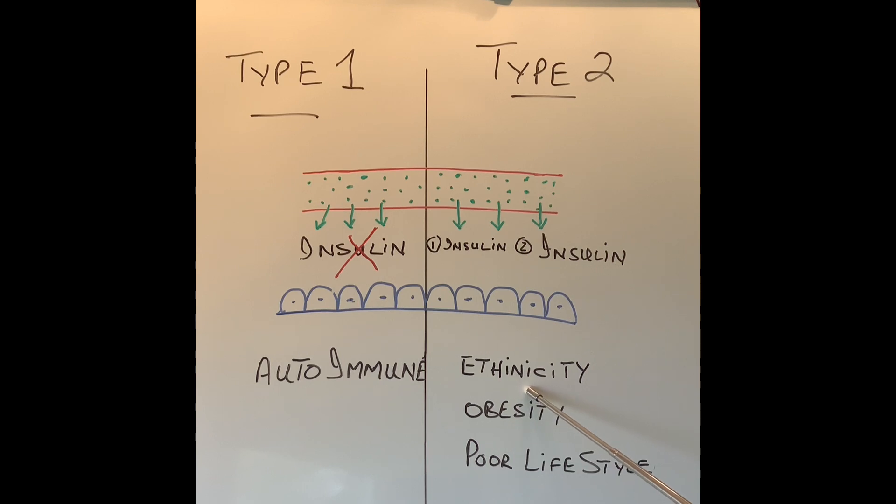In type 2 diabetes we can't change our ethnic origin so those risk factors cannot be changed. However poor lifestyle can be changed. Eating healthy, eating regular, eating a balanced diet is very important. Obesity can be changed by exercise, by surgery, etc.